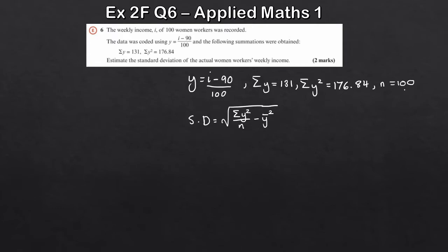So here now we can obtain a formula here for the coded standard deviation and then we can use the equation to obtain the estimated standard deviation. So plugging in the information we've got. So this is the square root 176.84 divided by 100 minus, so Y bar is the sum of Y, 131, divided by N, 100, and then square it. So this is 131 over 100 squared.